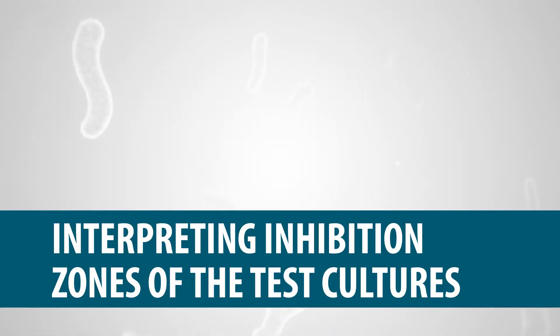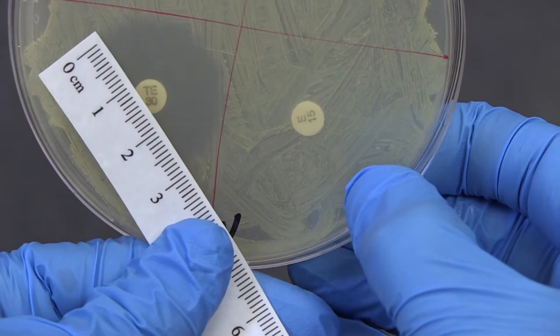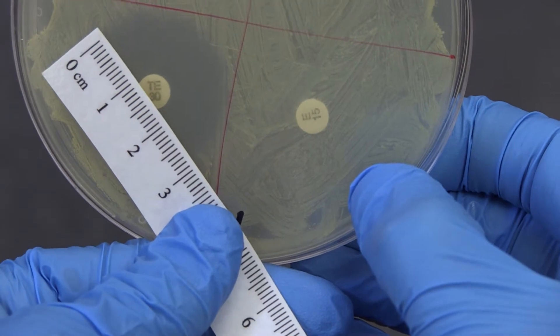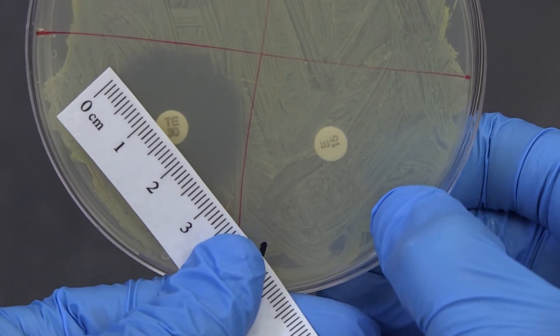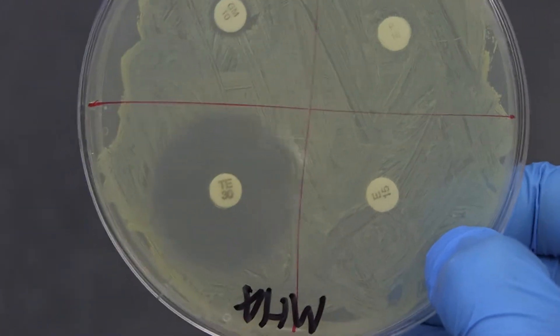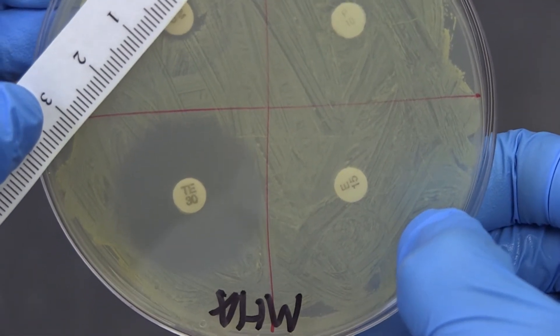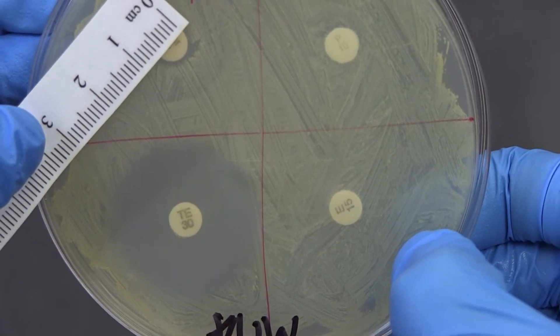Interpreting Inhibition Zones of the Test Cultures. After incubation, measure the diameters of inhibition zones in millimeters with a ruler. Use the Standards for Antimicrobial Disc Susceptibility Test Guide to determine if the culture is resistant, intermediate, or susceptible to the drugs.